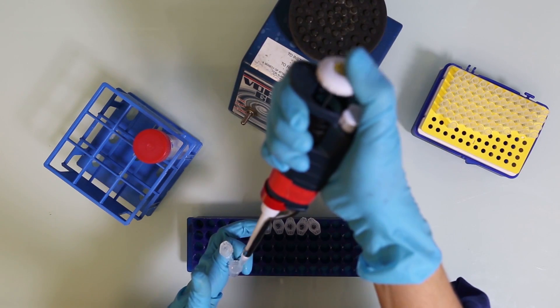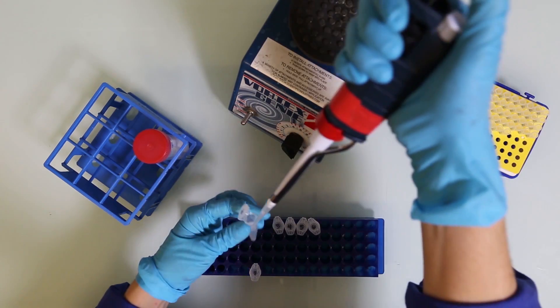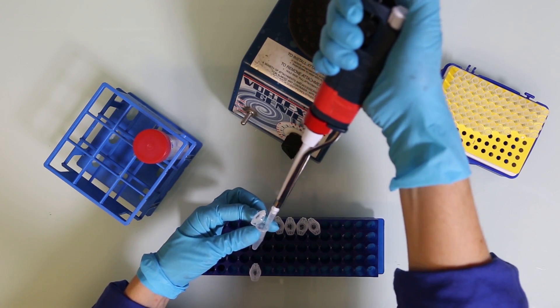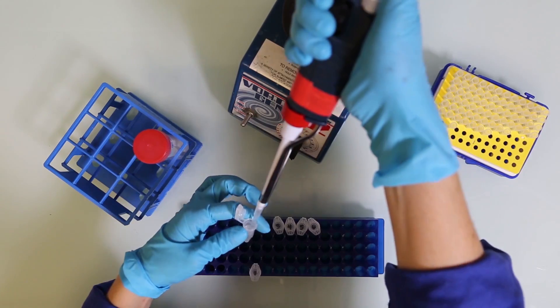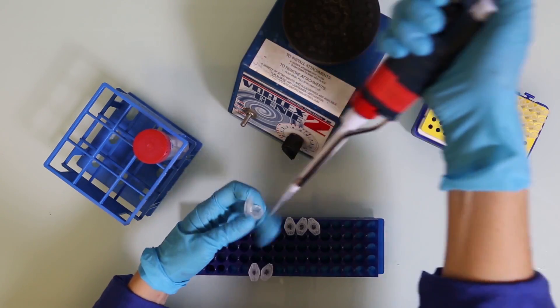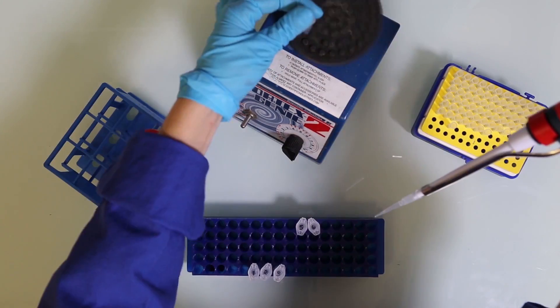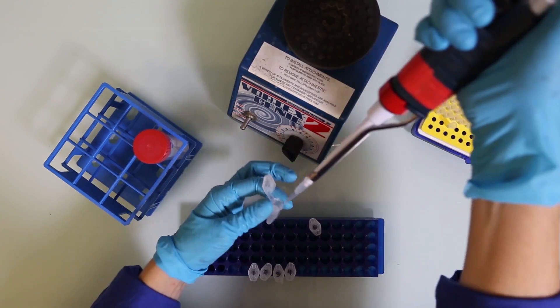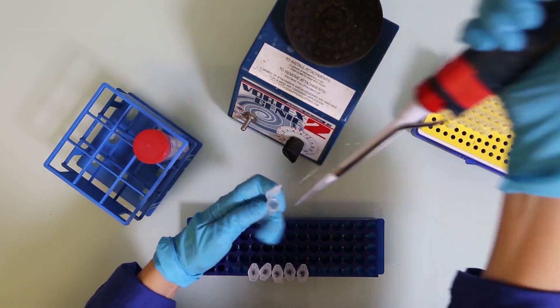Next, we take 100 microliters of this solution and mix it with 900 microliters of water to give us 1 in 1,000. We keep doing this until we get 1 to 10,000, 1 to 100,000, 1 to 1,000,000, and 1 to 10,000,000.